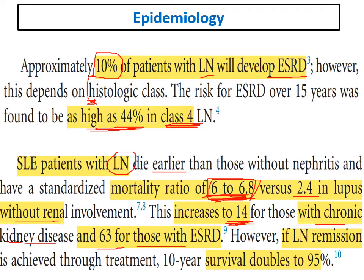It is very important to induce remission in patients with lupus nephritis. If a patient with lupus nephritis achieves remission, the 10-year survival doubles to 95 percent. Patients who do not achieve remission or become treatment-resistant have a very high risk of mortality.